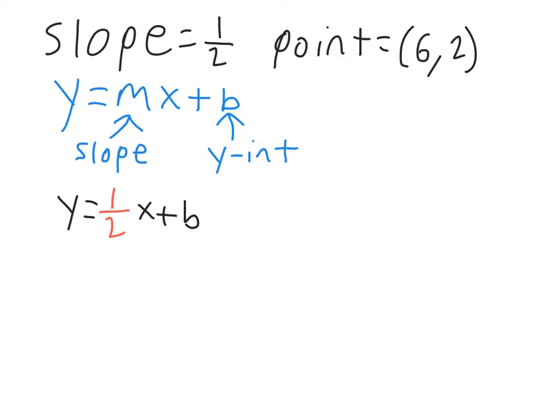Now we need to find out what the y-intercept is in this case. The way we can do that is we're also given a point. Remember, points are always written (x, y). So in this case, 6 is your x and 2 is your y. So you can rewrite this equation and plug in x and y, and that will leave only b, and then you can solve for b.